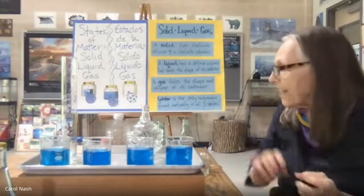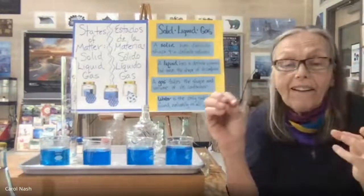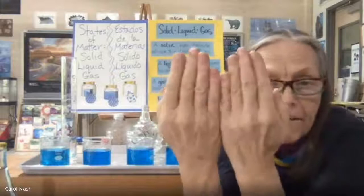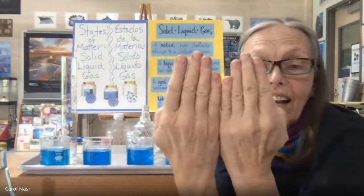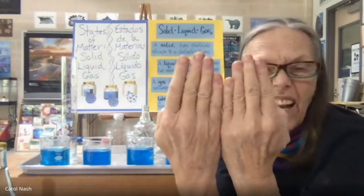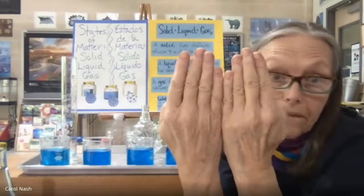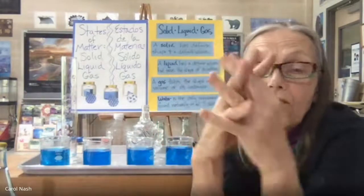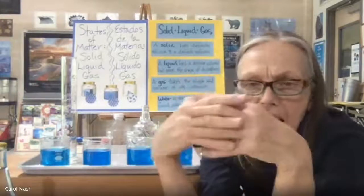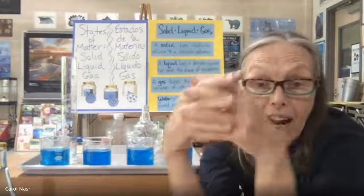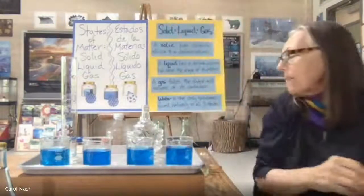Gases are so interesting. Think about the three states on the molecular level. A solid — the molecules are rigid, they don't move. But if we add some heat to our ice cube, it begins to melt and they loosen up and begin flowing around. And if we heat them up even more and they start to vaporize, they have to move around, escape, get out of there.